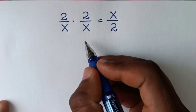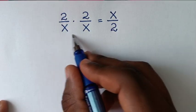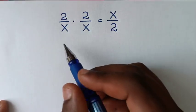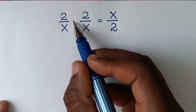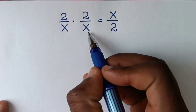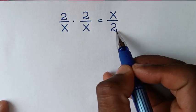Hello, you are welcome to solve this math problem, which is 2 over x times 2 over x is equal to x over 2.